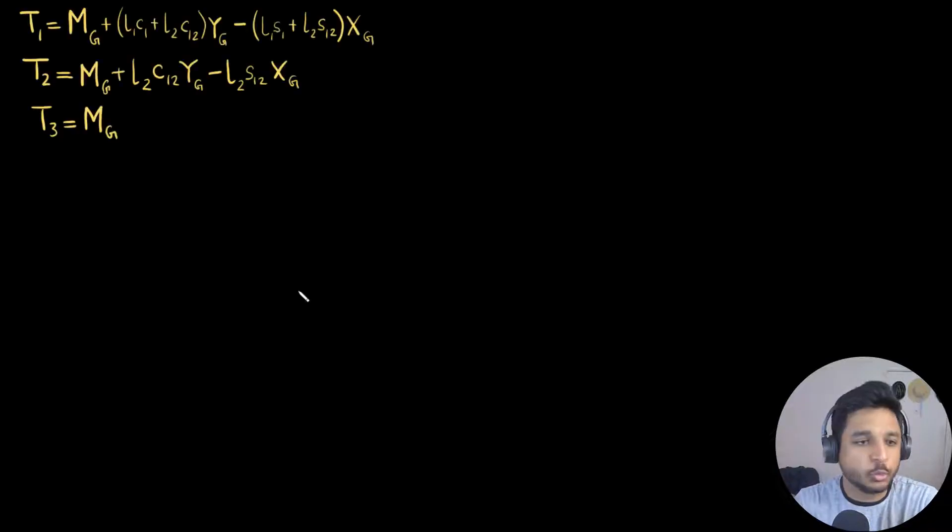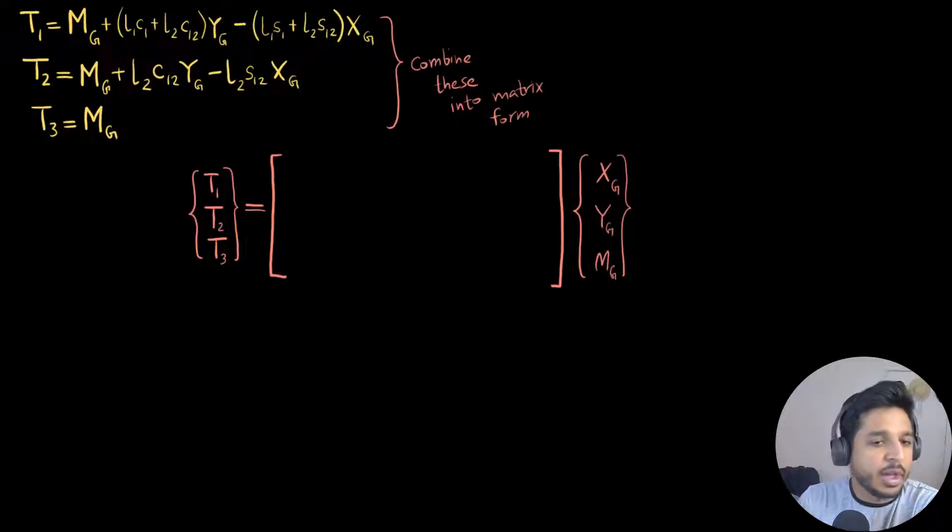In the first part, we got to this equation right here. We found out the three different torque requirements for the three different motors. Let's say I try to combine these three motor torques into a matrix form. I will get to in a moment as to why I do want to combine them into a matrix form, but for now just bear with me.